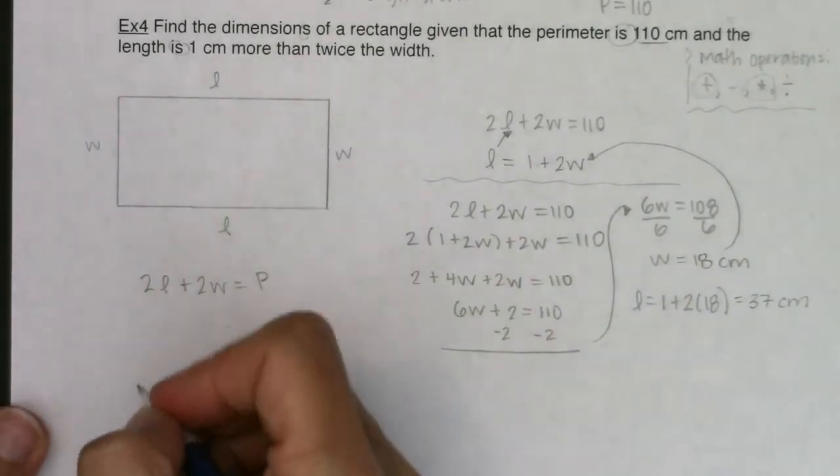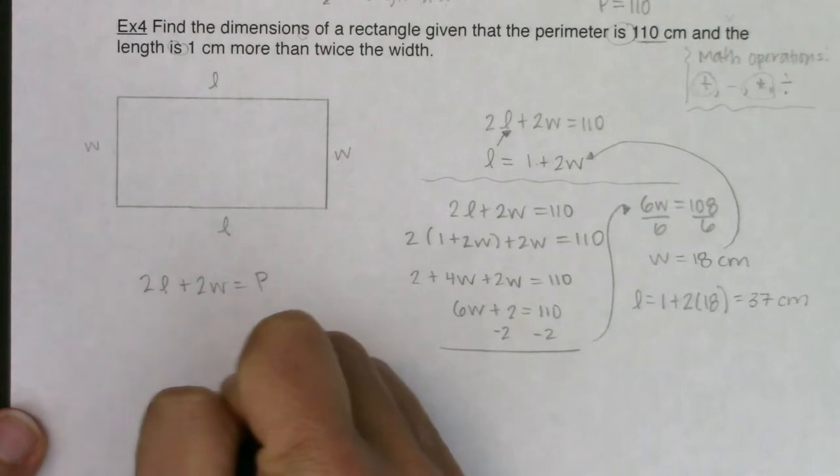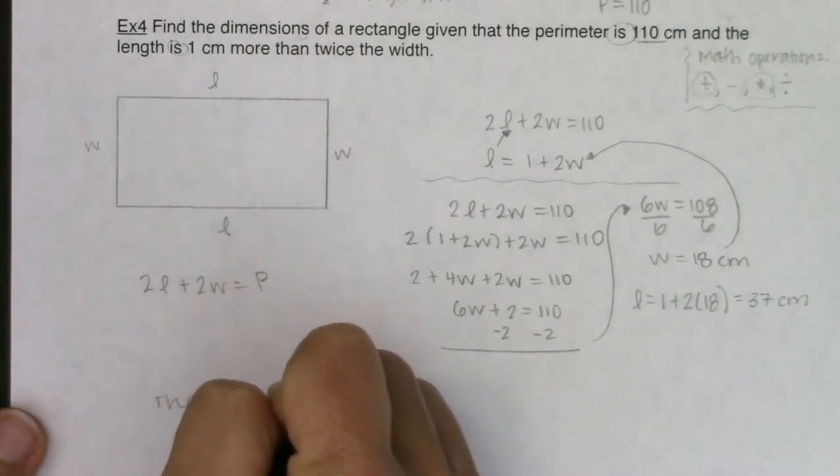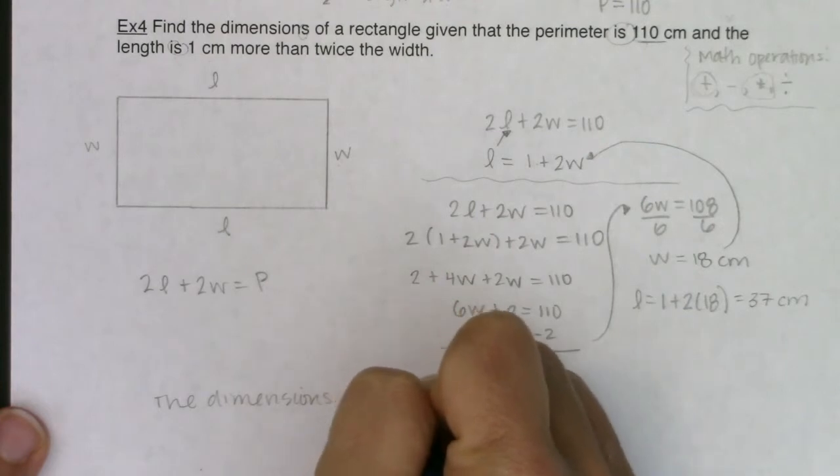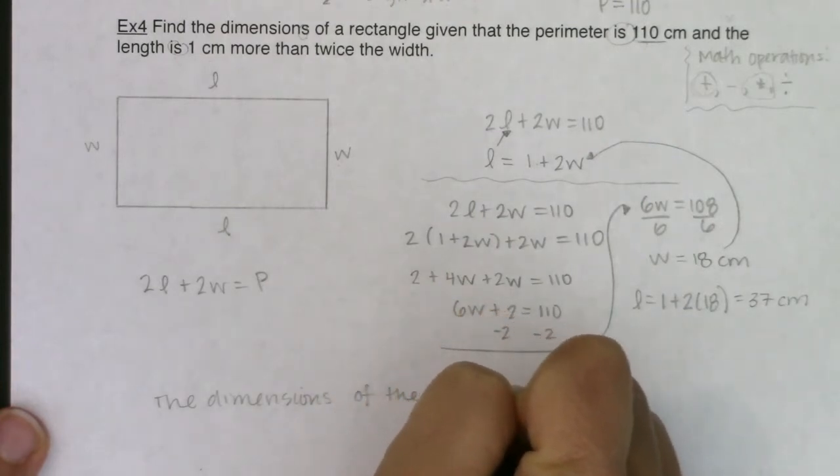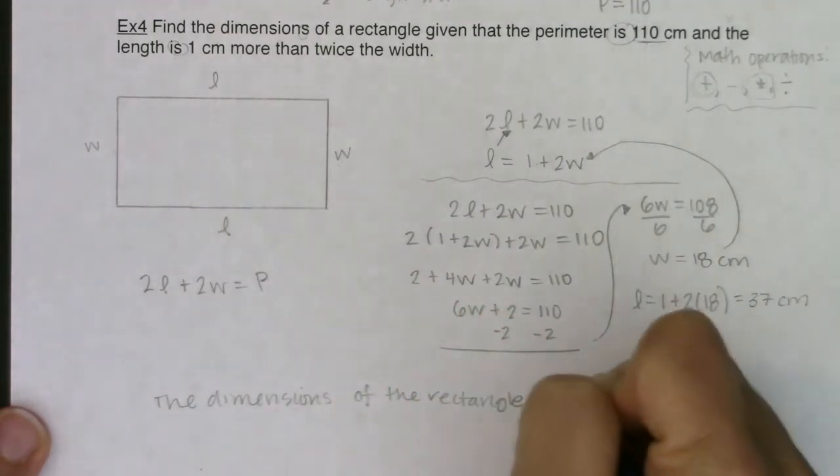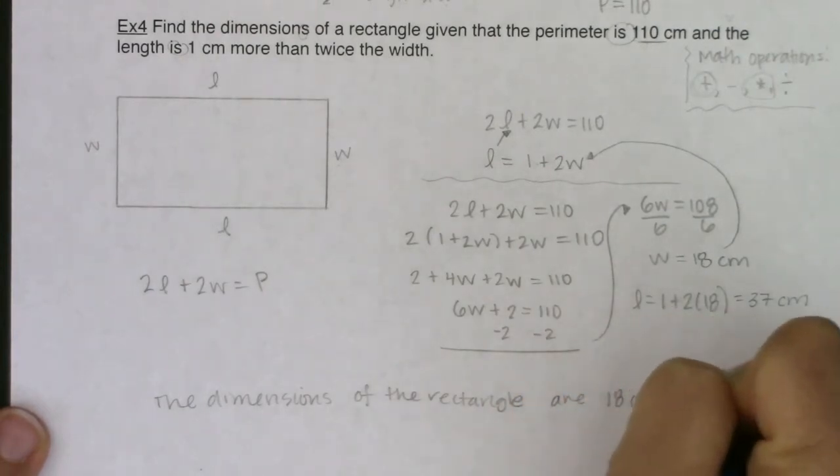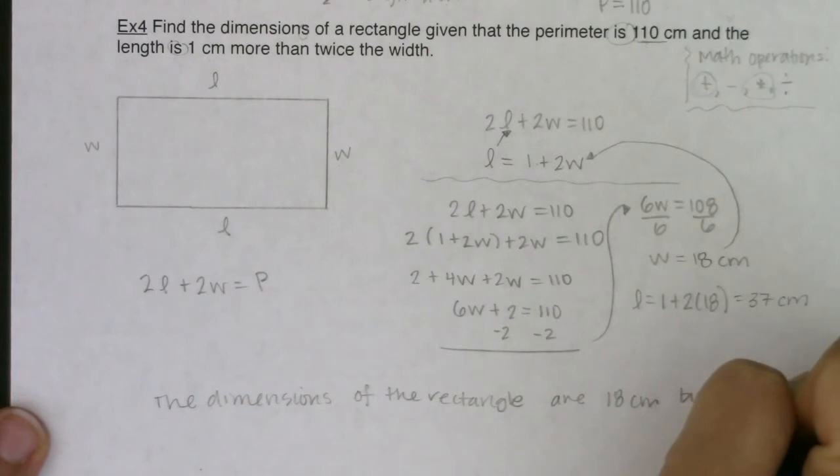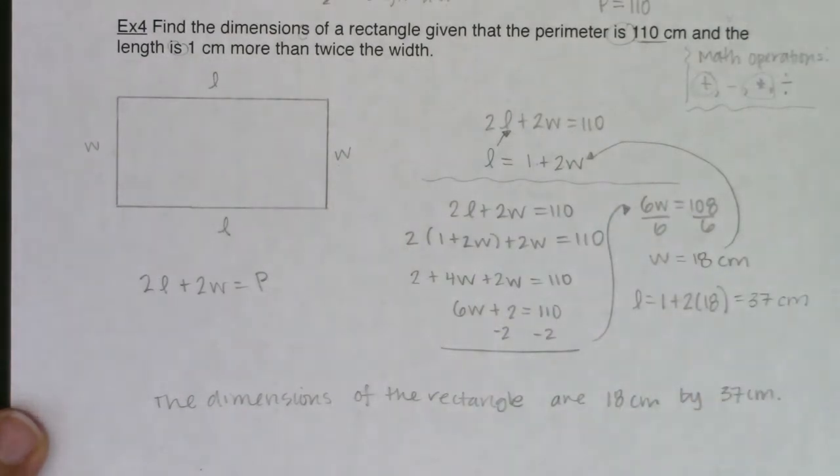Alright, so I would say the dimensions of the rectangle are 18 centimeters by 37 centimeters. And if you hear that sound going off, that is my phone. Sorry about that. I meant to put that on mute before I started. But that's what we got for example 4.